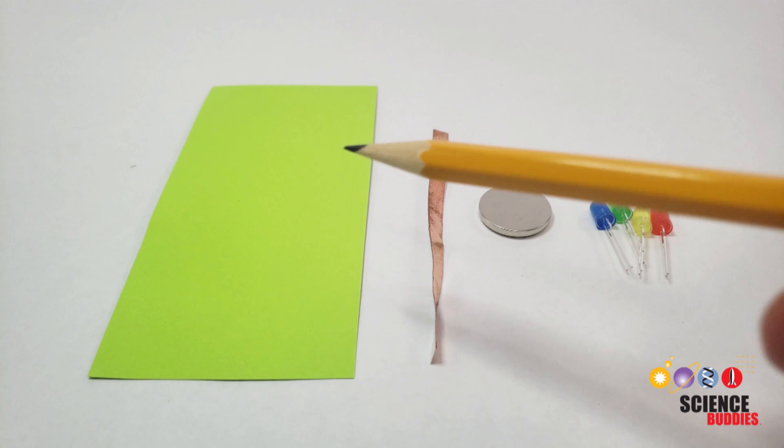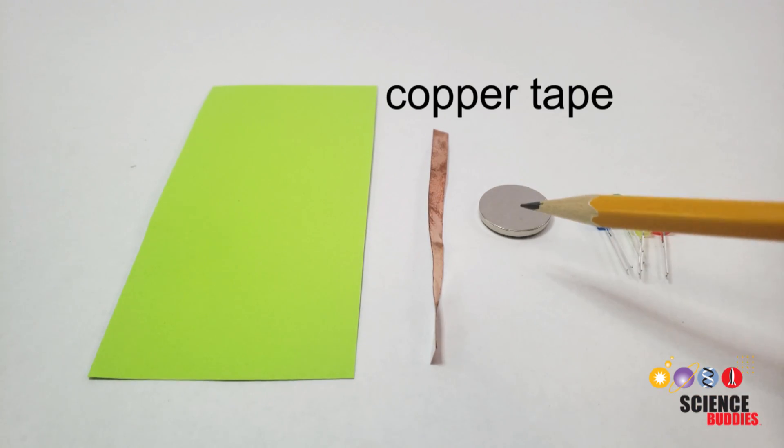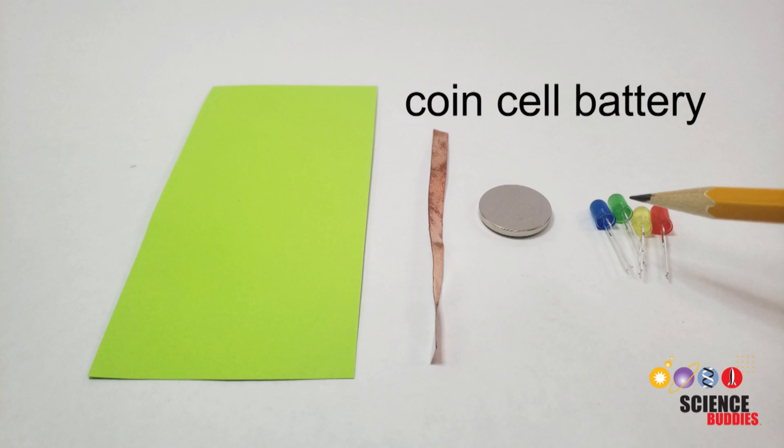To build a basic paper circuit, you'll need paper, copper tape, a coin cell battery, and LEDs.